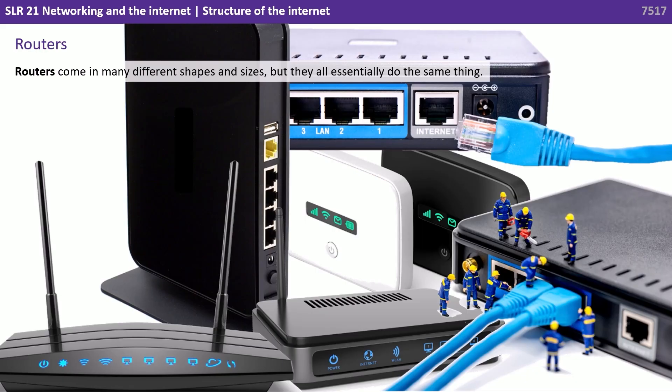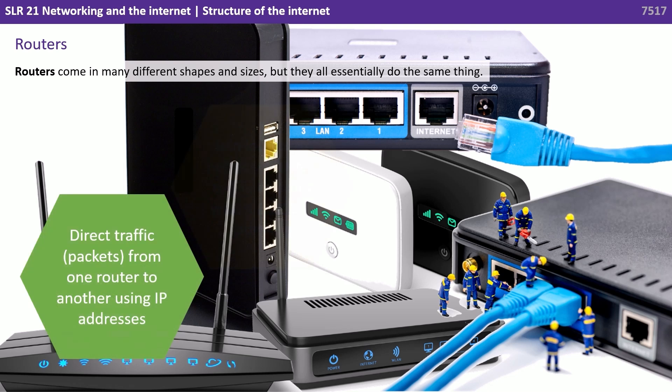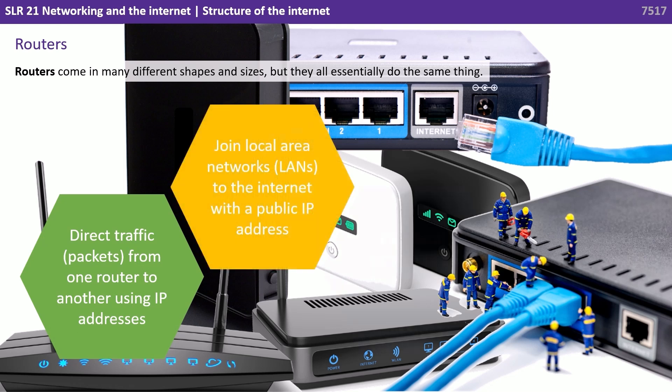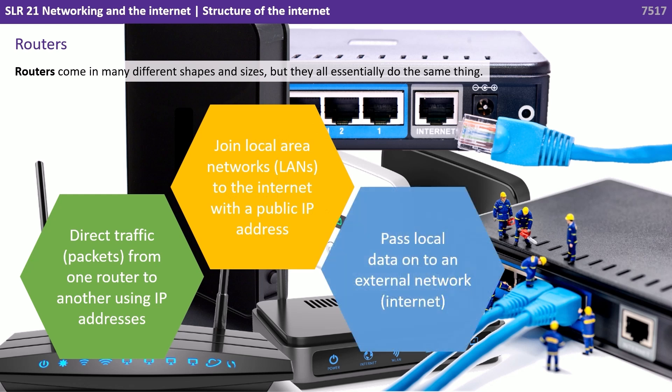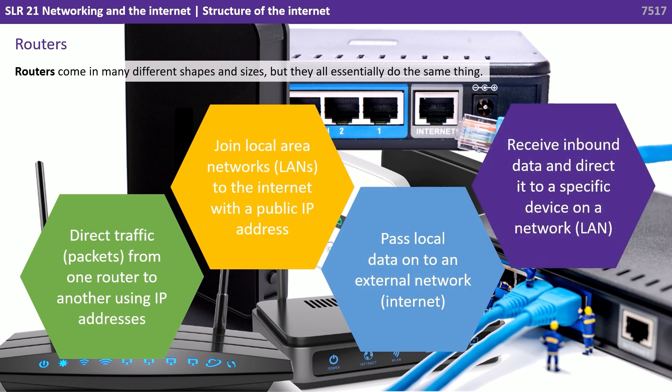So let's start with the router. Routers come in many different shapes and sizes, but they essentially all do the same thing. They direct traffic in the form of packets from one router to another using IP addresses. They join local area networks to the internet with a public IP address. They pass local data onto an external network such as the internet, and they receive inbound data and direct it to a specific device on a local area network.